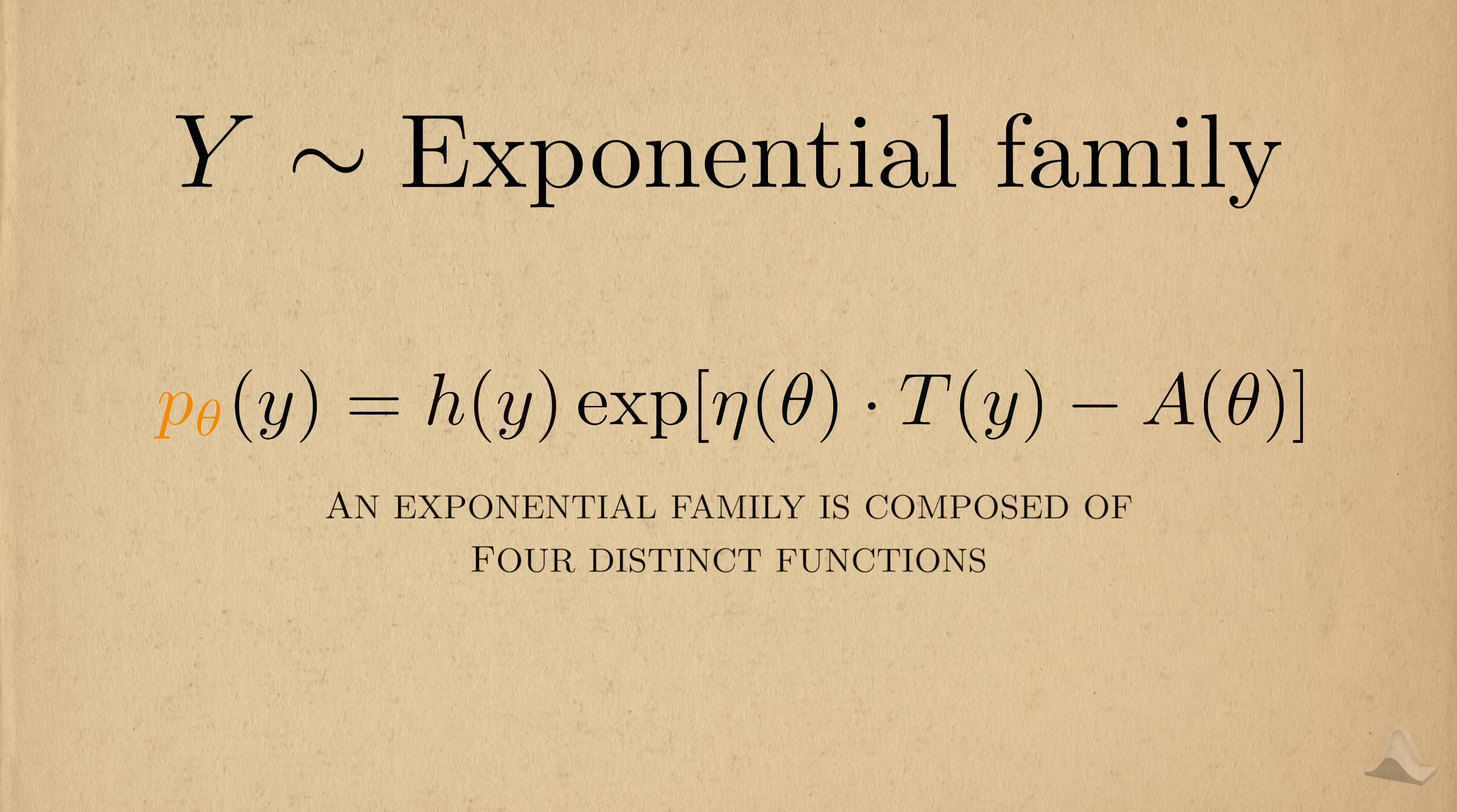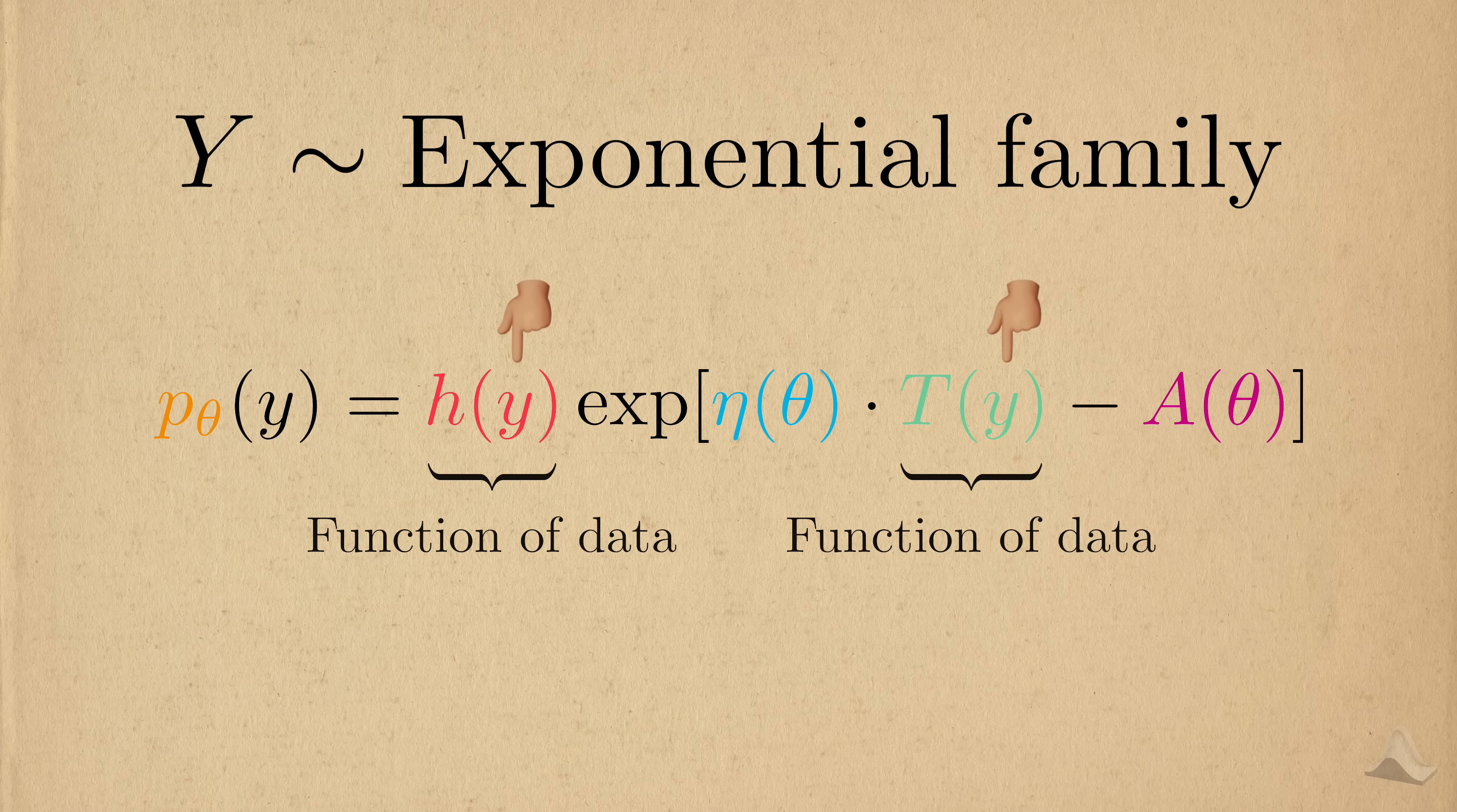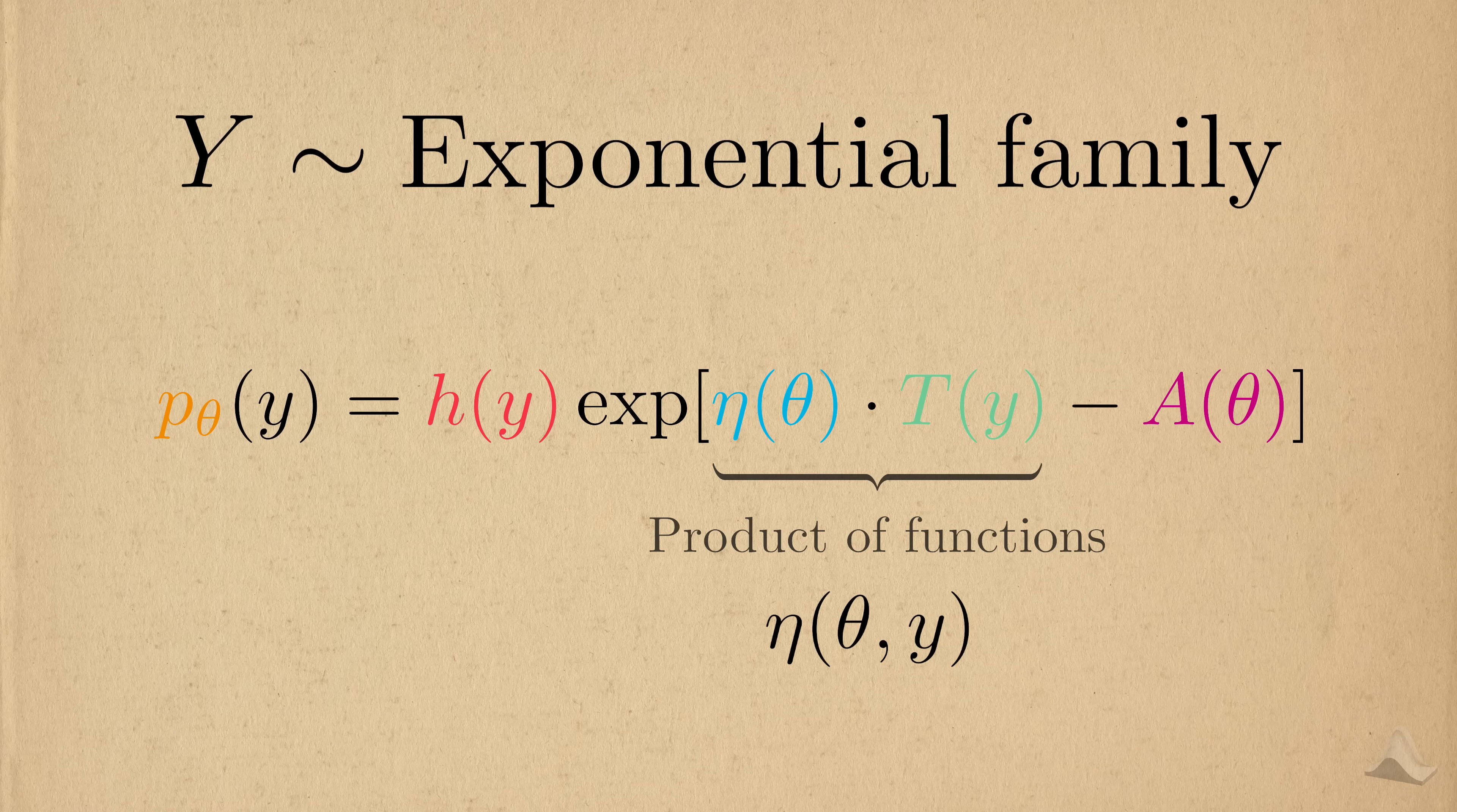Second, I want to point out that an exponential family is composed of four distinct functions. These two functions are a function of only the outcome, indicated by the sole y-argument here. Likewise, these two functions are functions of only the parameter theta. These three functions here need to be inside of the exponential function, which gives the family its name. Notice that this expression here is a product of two functions. If this were instead a function of both the outcome and the parameter, then we wouldn't have an exponential family. They need to be able to be written in this product form.